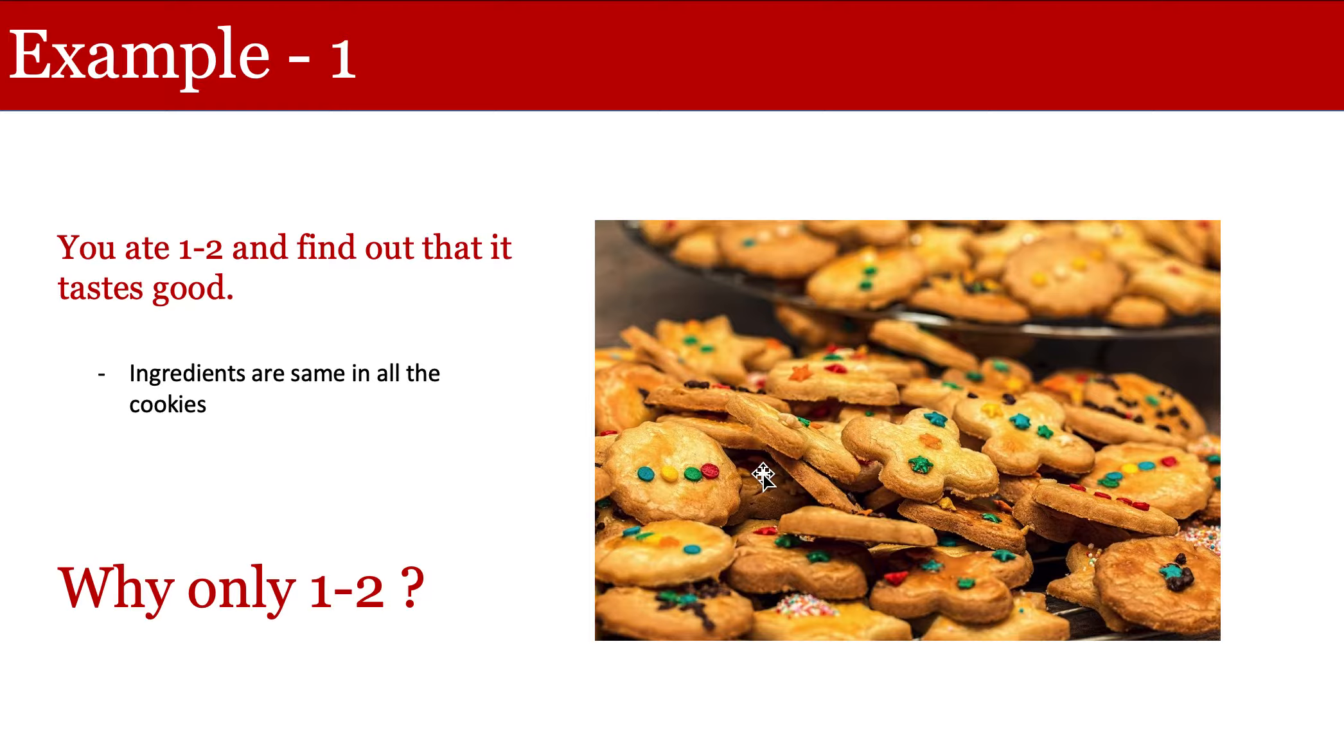So here if you can see the similarity with the sample and population concepts, you had an entire bowl of your cookies. You could have eaten all of them but still you decided to eat only one or two of them and then you kind of inferred that if those two taste good, the rest of the cookies also taste good.